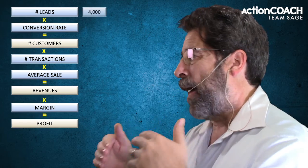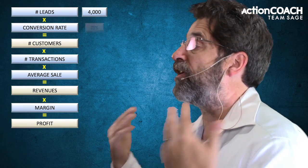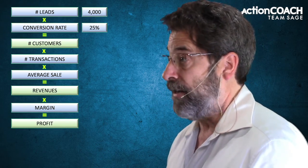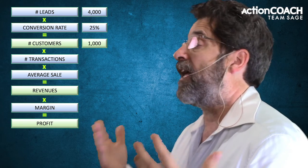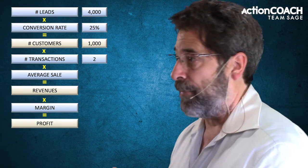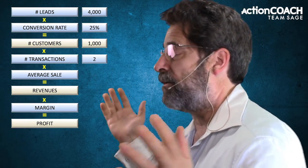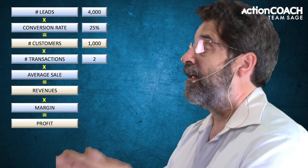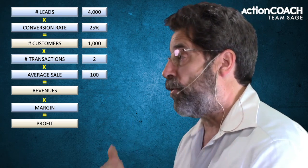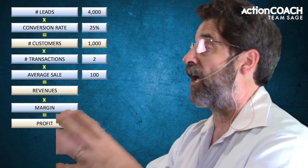Let me throw in some numbers so you can get an idea of what I mean. If you have 4,000 leads and a 25% conversion rate, then 25% of those 4,000 leads would become customers, giving you 1,000 customers. If on average those customers buy from you twice — some might buy once, some might buy dozens of times, but the average is two — and the average purchase amount is $100.